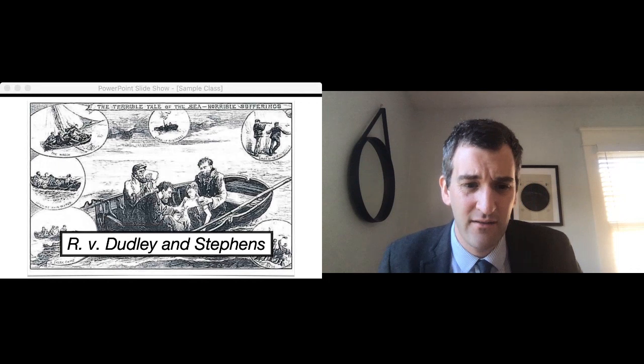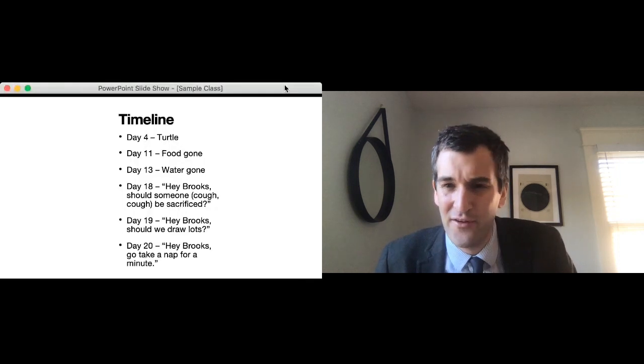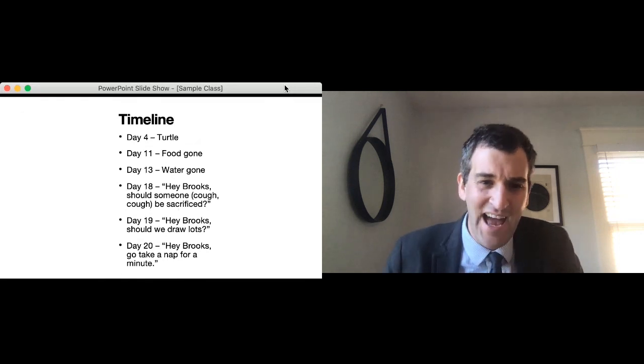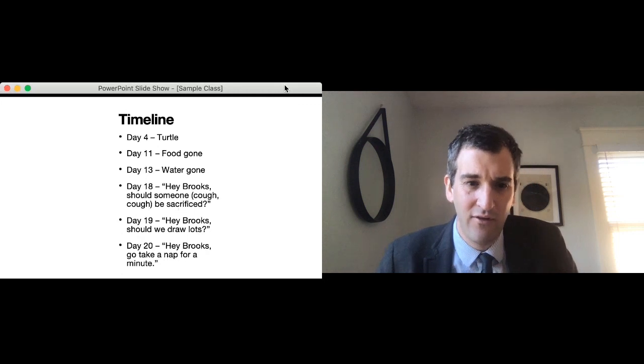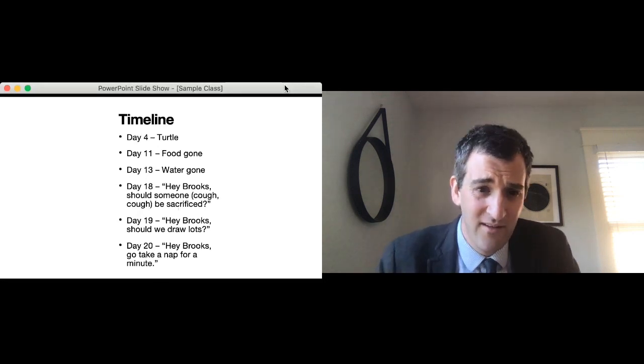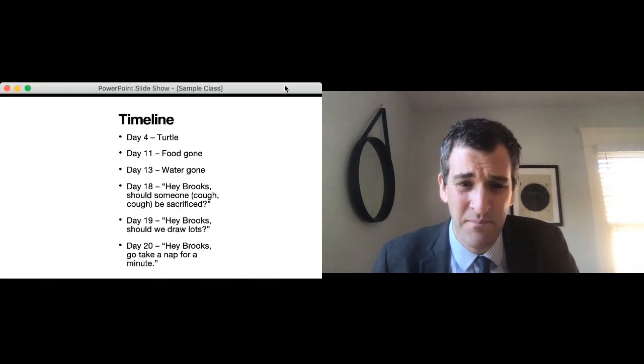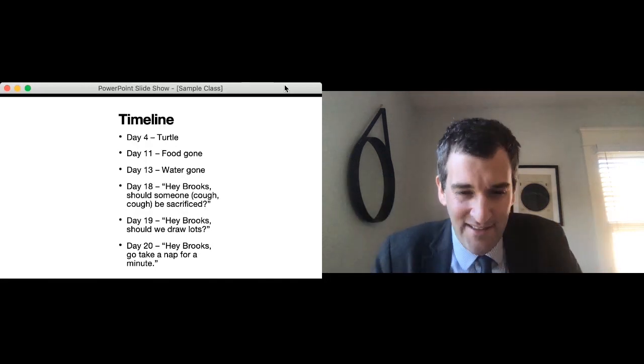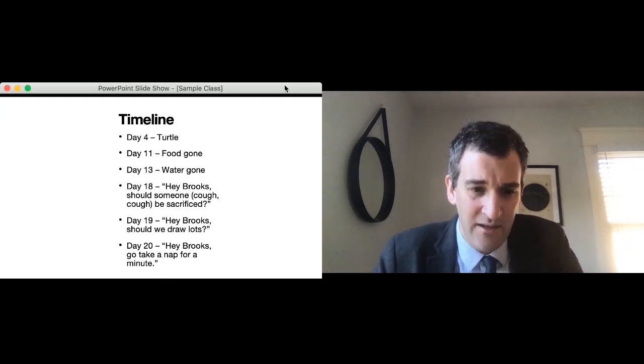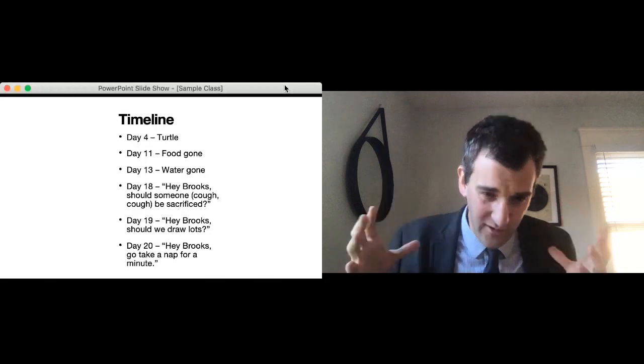Sometime around the Cape of Good Hope, they hit a gale, the boat breaks up, and they are all stuck on a life raft. As you heard, things went from bad to worse. On day four, they ate a turtle. On day 11, the food is gone. On day 13, the water is gone. On day 18, Dudley and Stevens ask Brooks, one of the other adults, don't you think somebody should be sacrificed? Clearly talking about the cabin boy. Brooks demurs. On day 19, they suggest drawing lots. Again, Brooks says count me out. And on day 19, they tell Brooks to take a nap. They kill the cabin boy. They eat him. And they are shortly thereafter rescued.